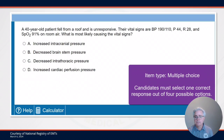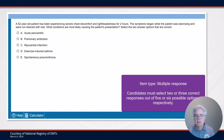A multiple choice item is an item that we're all very familiar with. The candidate must select one correct response out of four possible options. A multiple response item is much like a multiple choice item, but in this case the candidate is asked to select either two or three correct answers based on the number of options found in the question.